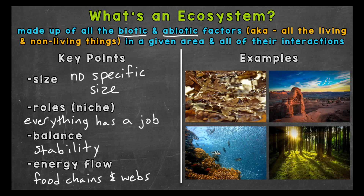Now let's take a look at four examples: a small puddle, a desert, a coral reef, and a forest. That gives us a wide range of examples. There are the basics of an ecosystem, showing the wide range and all the possibilities when it comes to ecosystems.